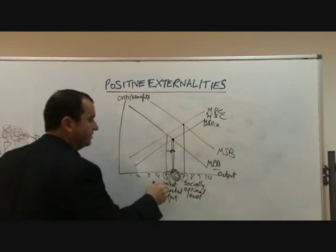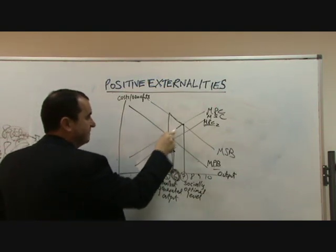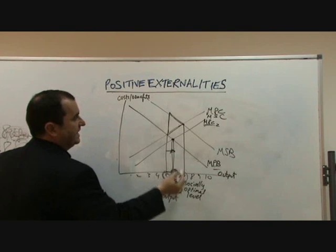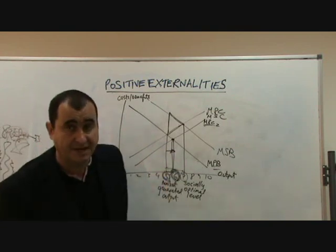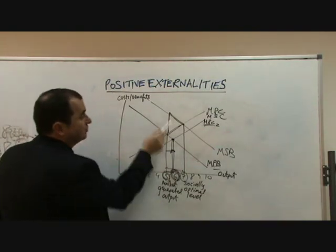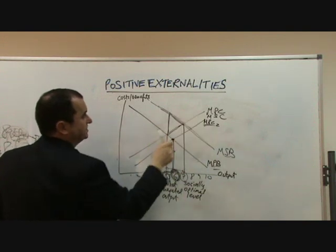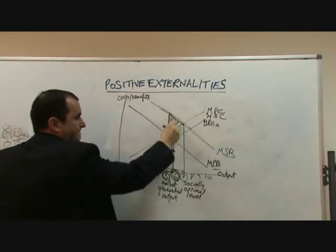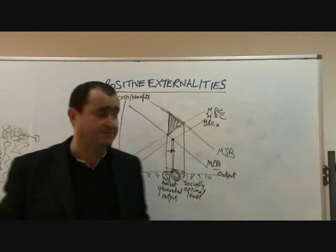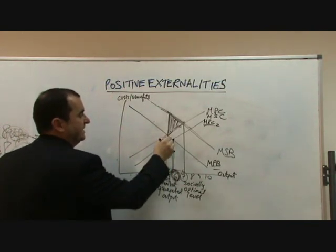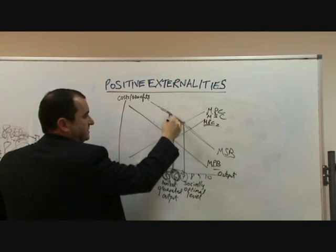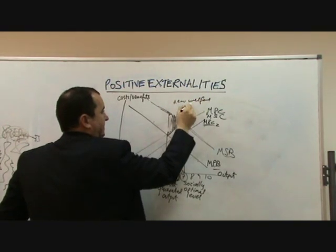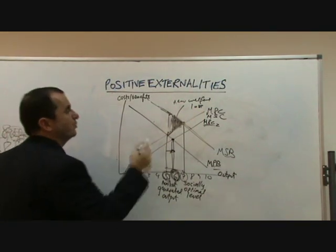On the graph, initially this area represented the size of the market failure — the gap between the market-generated output and the socially optimal level. Each unit between those two that wasn't being produced under market forces would have brought in more social benefit than social cost. All of those extra net benefits were being lost because of the market failure. Now, with the subsidy boosting output, that welfare loss has reduced. The new welfare loss due to market forces is smaller than it had been thanks to the subsidy.